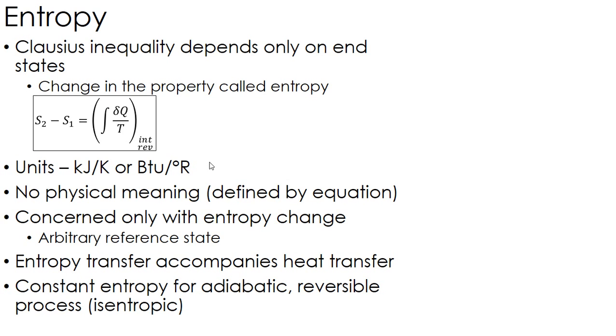Which if you remember, if we go back to that Clausius inequality, we have that sigma, if that sigma equals zero, then I have what we call an isentropic process. A constant entropy process is when I have adiabatic reversible process. And we're going to talk much more about that later.